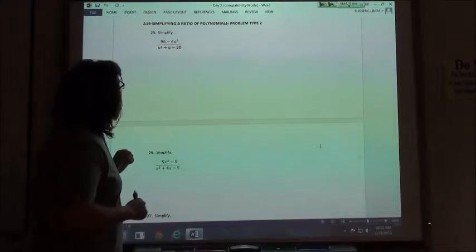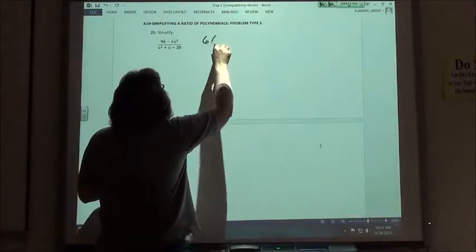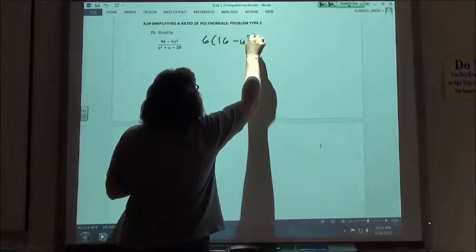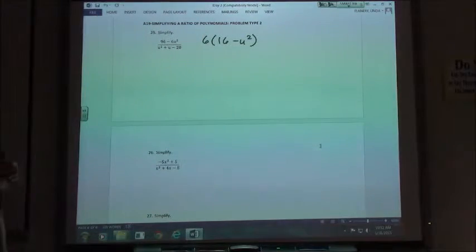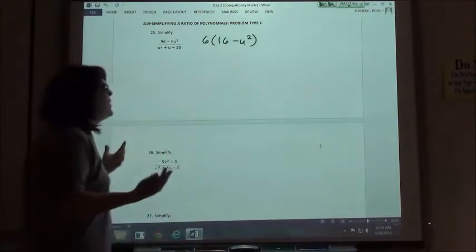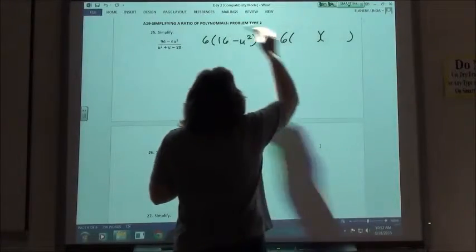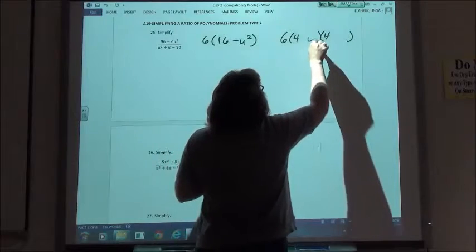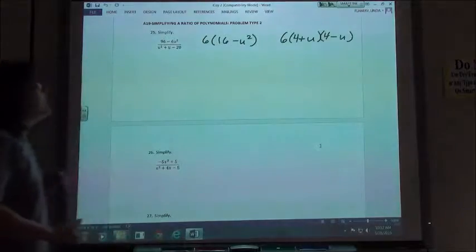In this case, I can factor 6 out of both of those. So I would take out the 6, 96 divided by 6 is 16, so I'm going to have 16 minus u squared. Then I'm going to look to see what's left in the parentheses, can I factor that again? If I look at this one, this is the difference of perfect squares, so I can factor that with my two sets of parentheses. Factors of 16, 4 and 4, factors of u squared, u and u. One will have a plus and one will have a minus, since we have the difference of perfect squares.